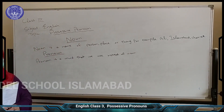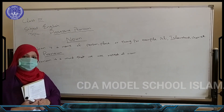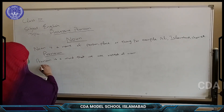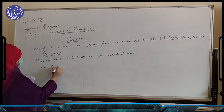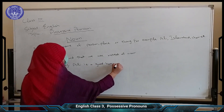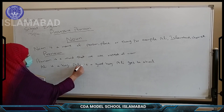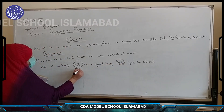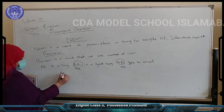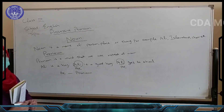For example, if I say: Ali is a boy. Ali is a good boy. Ali goes to school daily — it will look very odd. So what will we do? We will only use Ali one time: Ali is a boy. And again when we use Ali, we can use 'he'. So he is a pronoun — a word that we can use instead of a noun is called a pronoun. So 'he' in this example is a pronoun.